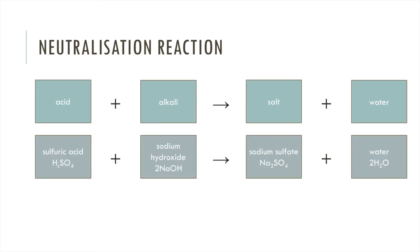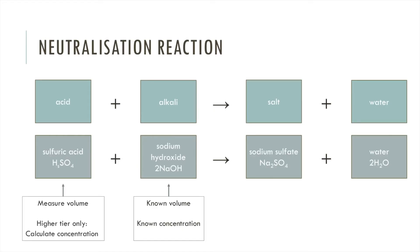I'm going to be reacting sulfuric acid and sodium hydroxide to form sodium sulfate and water. You can see here a word equation and a balanced symbol equation. In this practical we have a known volume of sodium hydroxide and we know its concentration. By doing a titration we can measure the volume of sulfuric acid required to neutralize the sodium hydroxide, and we can also calculate the concentration of sulfuric acid.